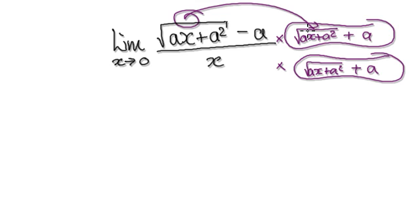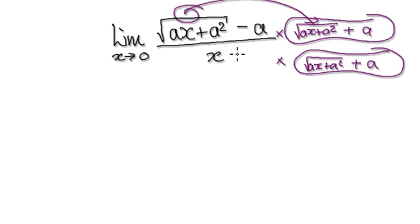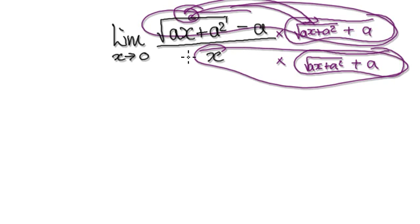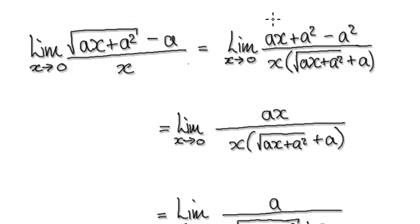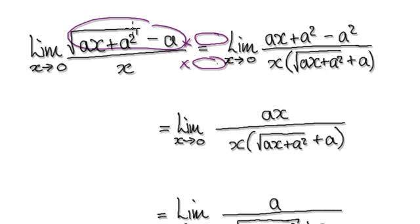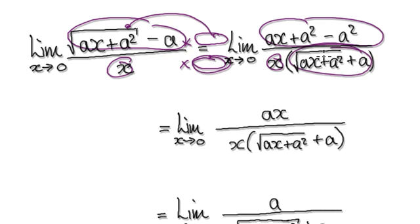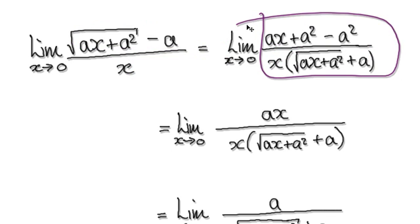So now this times this, the two square roots cancel each other out. Multiply this whole thing and multiply this thing here, it will then give you this. So what we've done here is we multiply top and bottom by the conjugate of this. And then this times this gives you this. And then this times the conjugate gives you this. So we are now at this stage here.